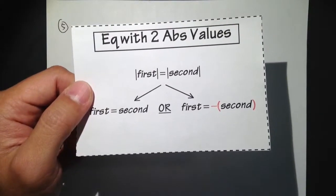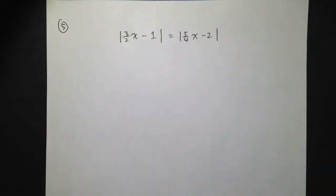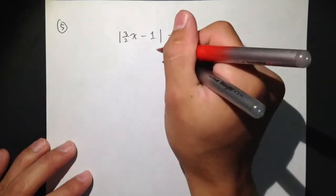Equation with two absolute values, example number 5. So, let's get to work.